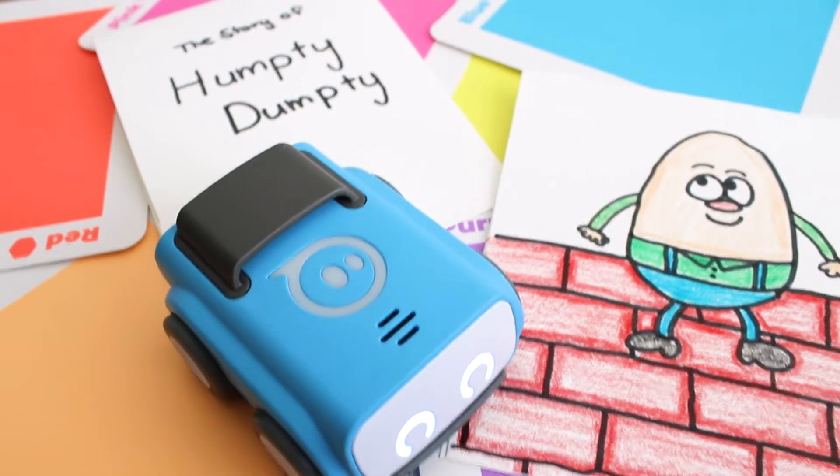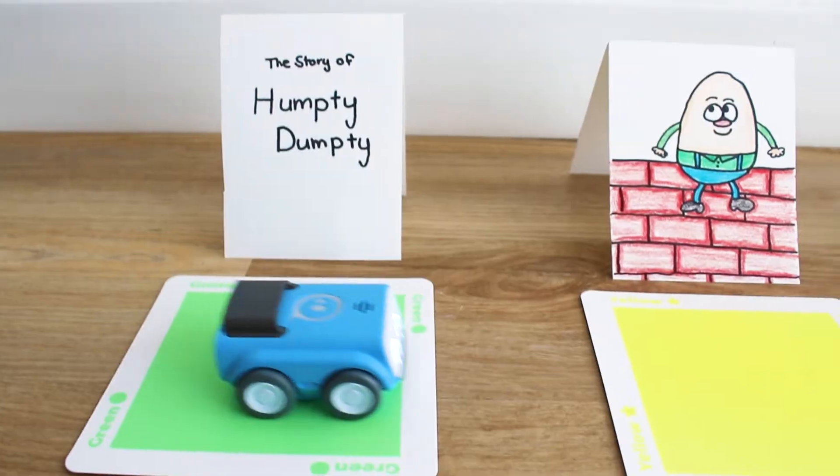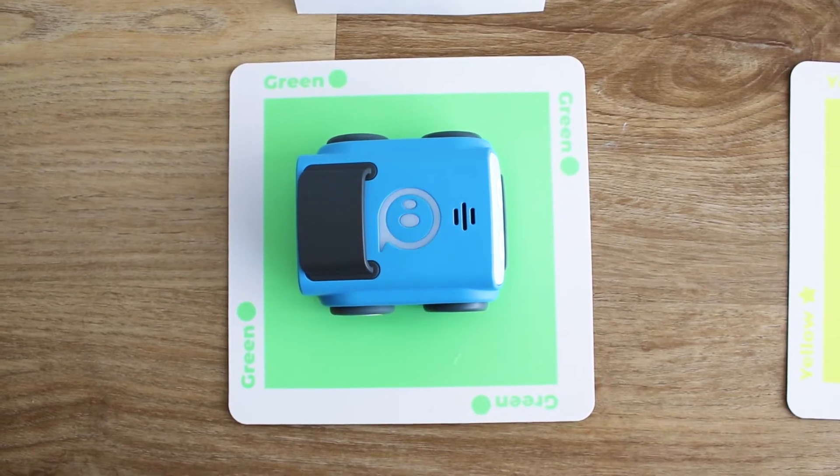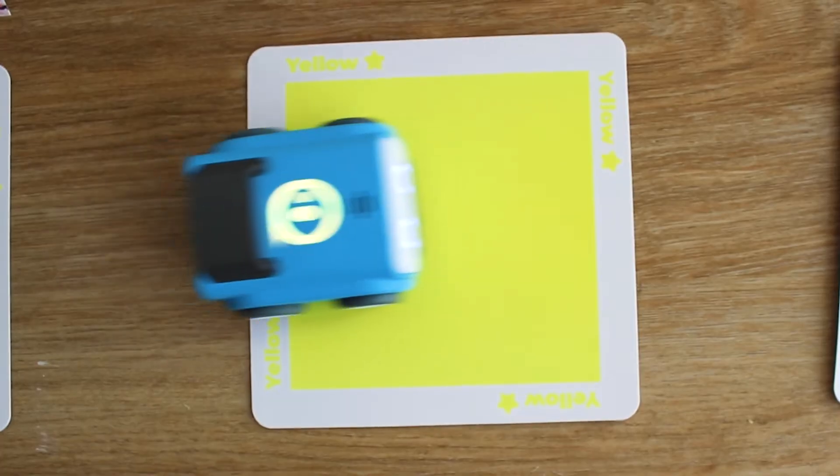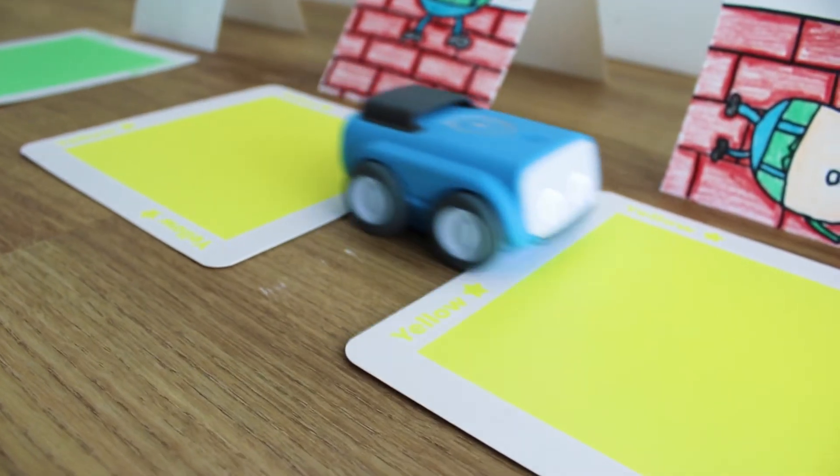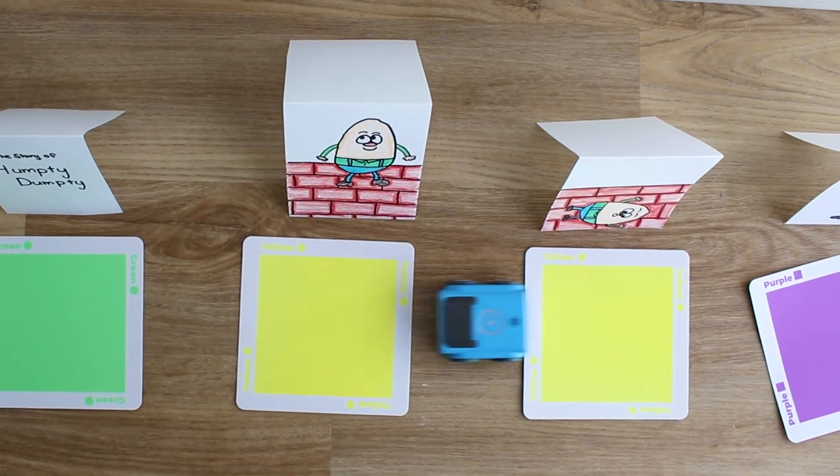Storytelling is a way that we share ideas, cultures, and experiences with others. Have students practice learning or retelling a story and learn about the three parts of a story arc. Then create a path for Indy that reflects each part of the story. Complete your path with scenery and props to support the main plot points. Have students practice telling the story as Indy drives.